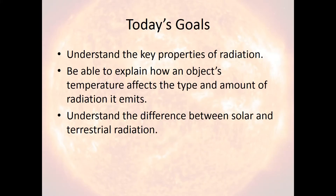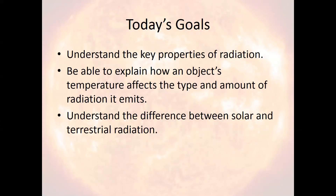Our first goal for today is to understand the key properties of radiation — what makes radiation what it is, and what types of radiation are there. Then we're going to talk about a few key laws that help define how temperature affects the type and amount of radiation that an object emits, and what kind of objects emit radiation. And then we're going to end this lecture by talking about the difference between solar radiation, given off by the sun, and terrestrial radiation, given off by the earth.